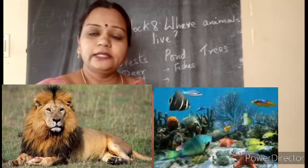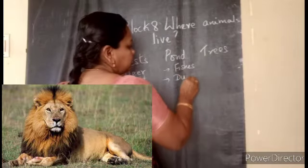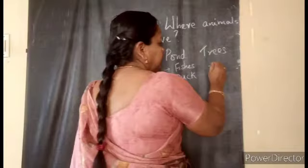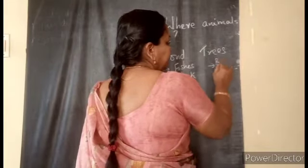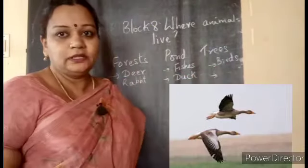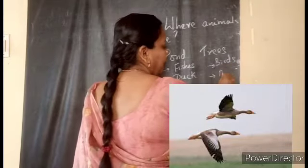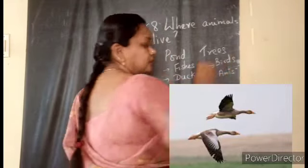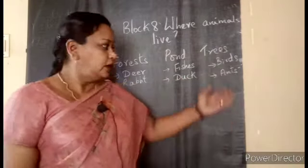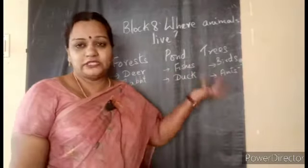Near the pond, birds like ducks will also be there. On the trees, generally birds are seen — they will build their nest. Ants you can see, and sometimes snakes are found on trees. You can write three or four for each category. So this indicates that in almost all places on the earth we can find animals.